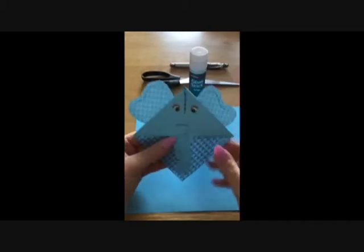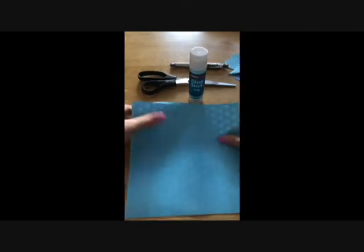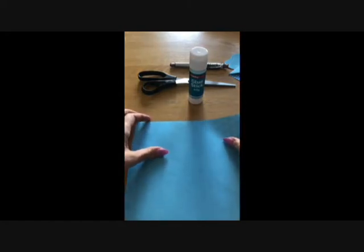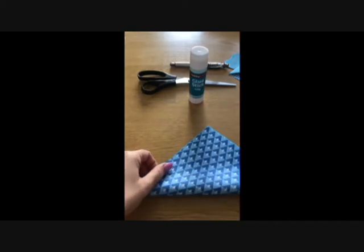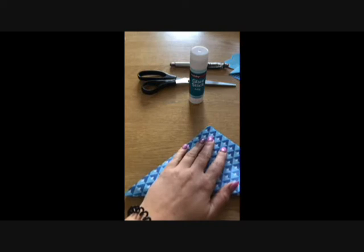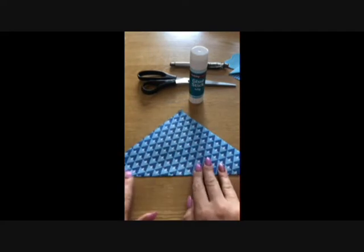So just to remind you this is what we're making. The first thing you need to do is get one of your pieces of paper and you're going to fold it in half. Make sure the corners all line up really carefully and then you're going to press down to make a fold.